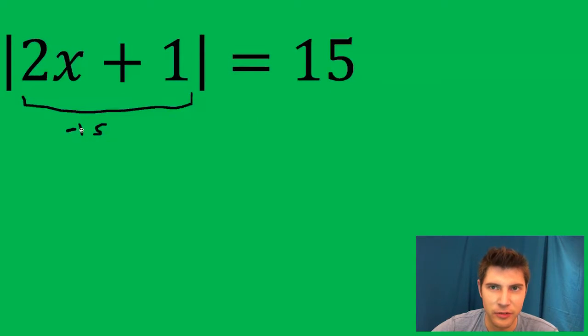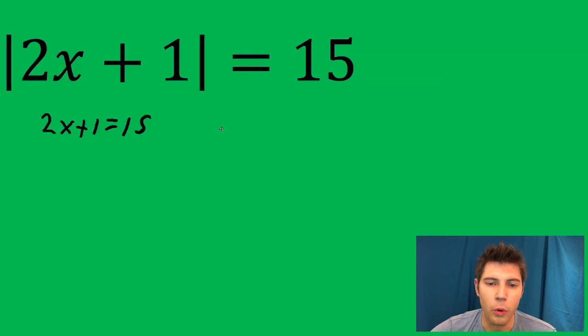Or if it equals negative 15, then the absolute value would be positive 15. So what we need to do is set this inside equal to 15, or this inside stuff equal to negative 15.